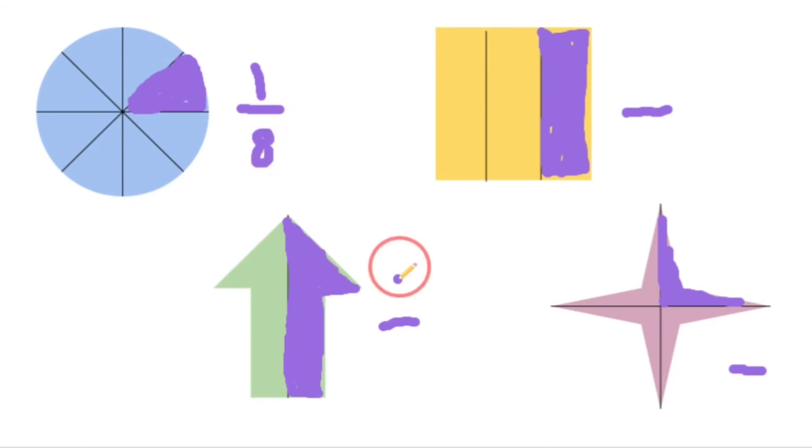How many are colored here? One. How many in total? Two pieces. That's one half.